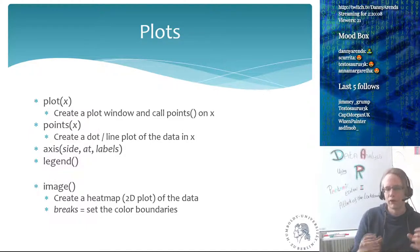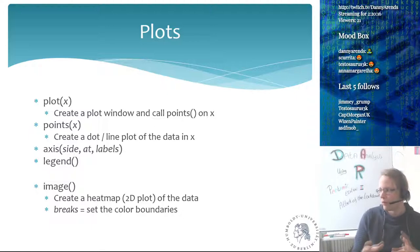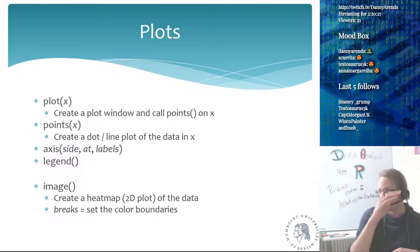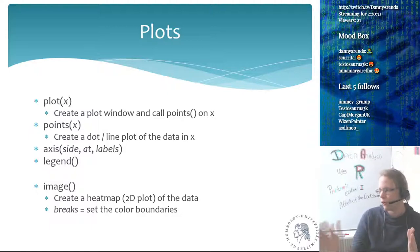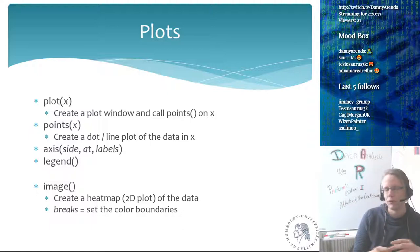In R, creating a plot can be done using the plot function, which is very logical. When you call it with a vector of numbers, it creates a plot window, figures out the range of the data — the minimum and maximum value — puts that on the y-axis, and puts 1 to the number of elements on the x-axis, then creates a dot plot of the measurements.